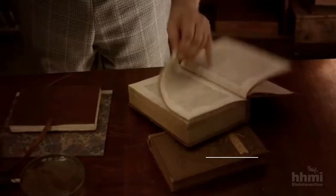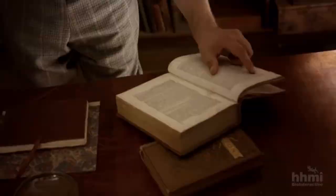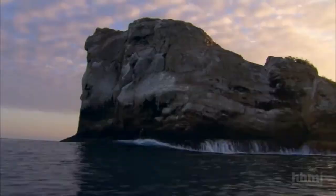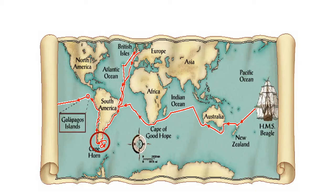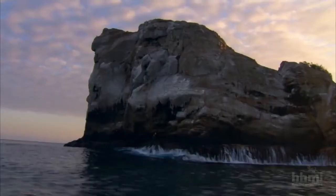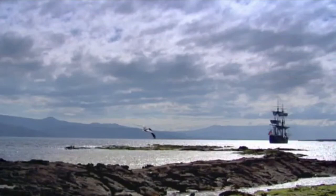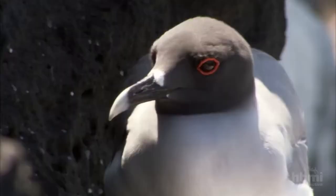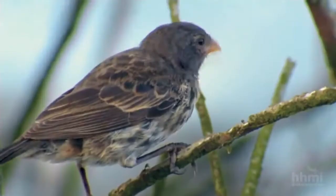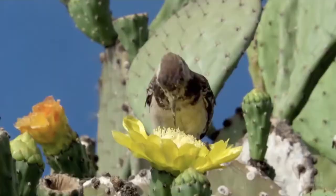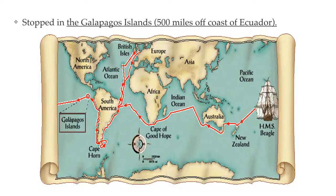During that trip, Darwin read the geological theories of Charles Lyell, which made him think about gradual change over a long time. He got to observe how geological changes happen when he felt a strong earthquake in Chile and saw its effects on the geography around him. But the main thing the voyage did was give Darwin access to hundreds of specimens from similar-looking species that lived close to each other but in slightly different environments.